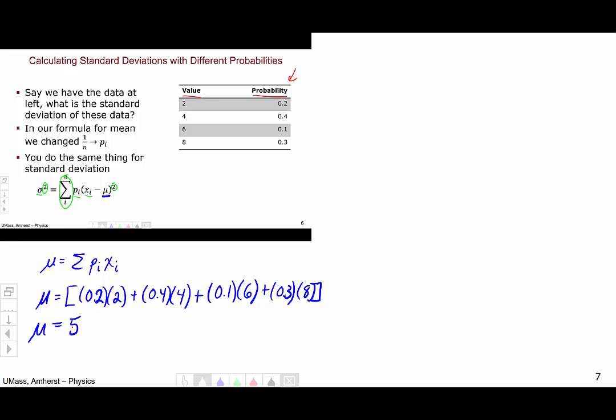So now that we have a mean, we can proceed to calculating the standard deviation. The way I'm going to do this is I'm going to add a column to my table and say x minus average for each value. So 2 minus 5 is minus 3, 4 minus 5 is minus 1, 6 minus 5 is 1, and 8 minus 5 is 3.